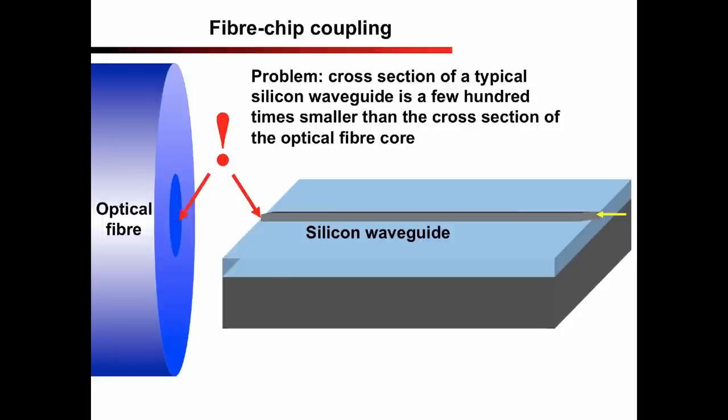Let's now look at one practical application. How to get light from the optical fiber into tiny silicon photonic circuits? The problem is that the cross-section of a typical silicon waveguide is a few hundred times smaller than the cross-section of the optical fiber core.